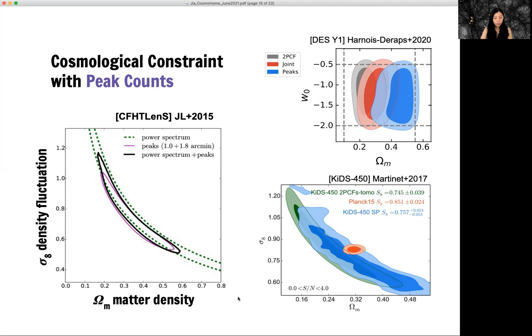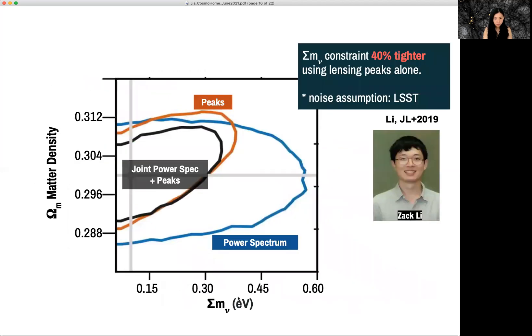everyone finds the very similar results that peak counts. So we have done the forecast of peak counts to constrain neutrino mass for LSST.